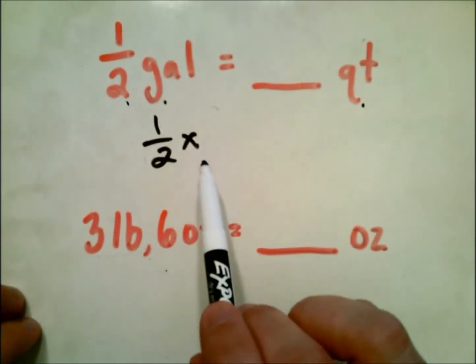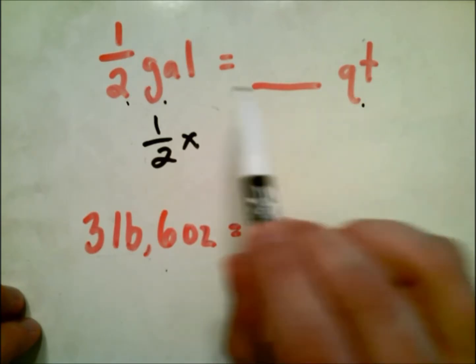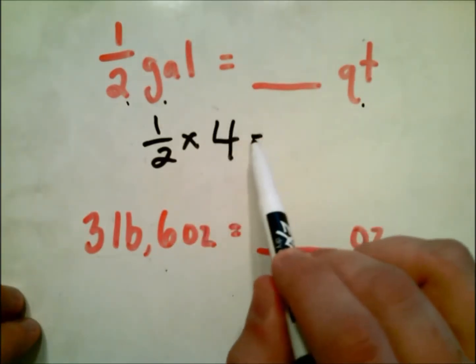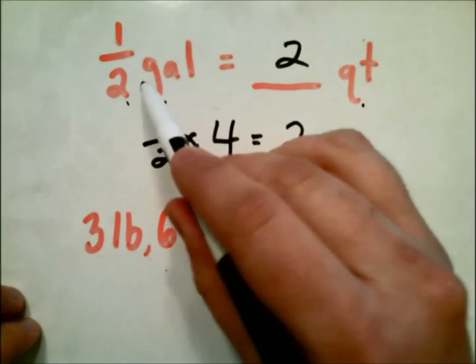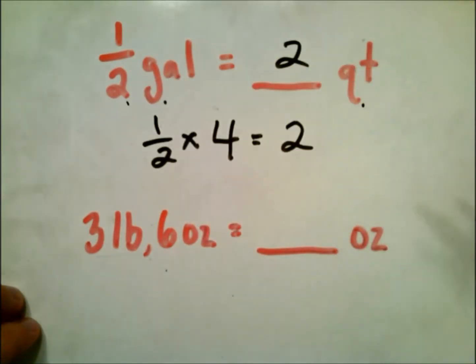I'm going to take my base number of 1/2, put it there, multiply by the number of quarts in every gallon, and that is 4. We multiply 1/2 by 4, we get 2. So one-half gallon equals 2 quarts.